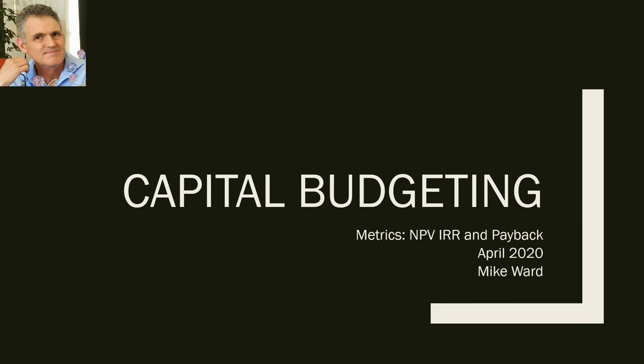Capital budgeting is where we're making long-term decisions about buying big assets, more than one year. And this is a much better metric, the NPV, than what we were doing before with ROE and so on, which measures a single year.